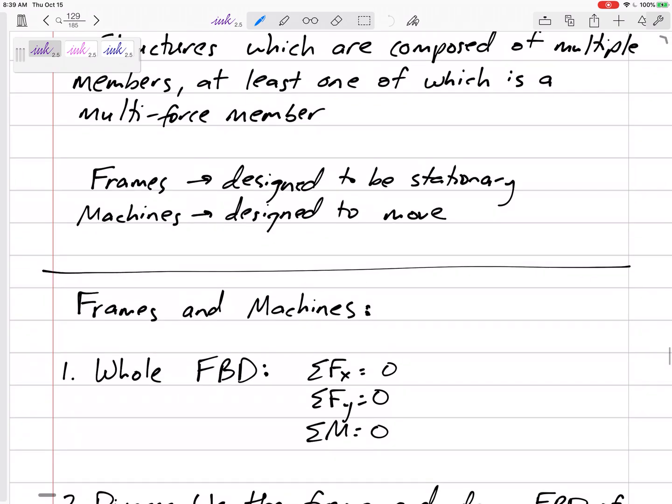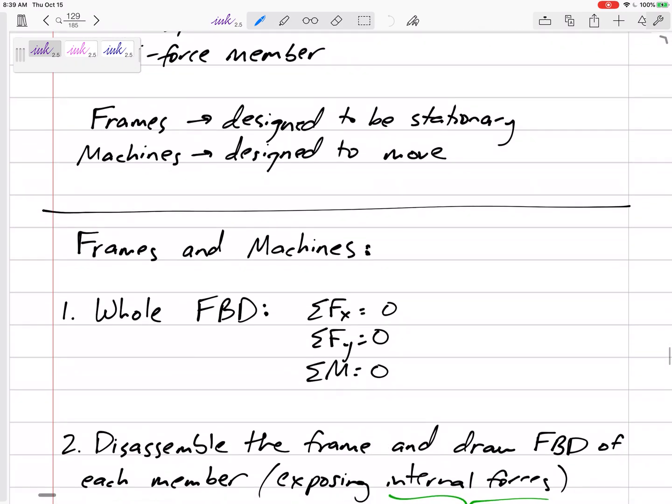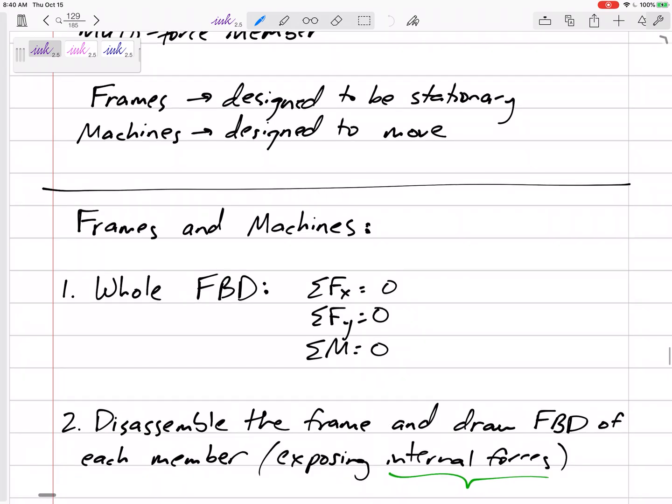So what can we do for frames and machines? Well, just like all the problems we've been doing, the whole structure - the whole frame or the whole machine - is in equilibrium. It's not moving. So we can look at the whole free body diagram and sum the forces: ΣFx = 0, ΣFy = 0, ΣM = 0.